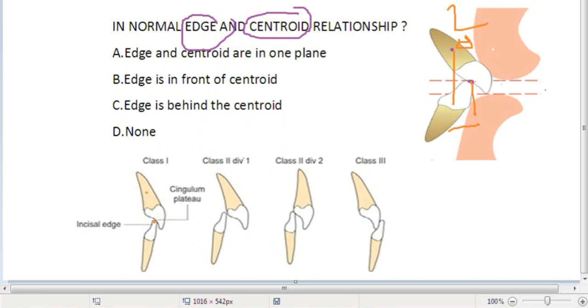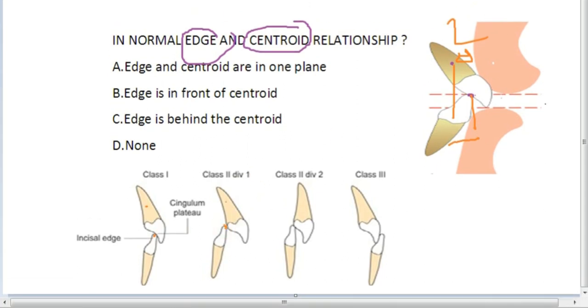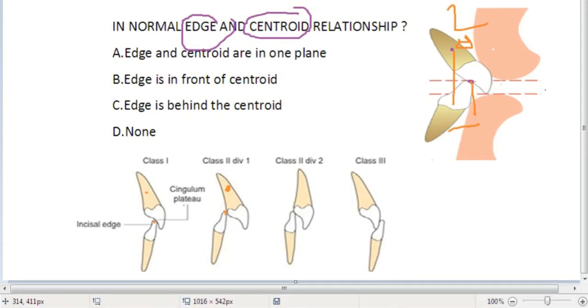If you take a Class 2 div 1, your edge will be here and your centroid will be here. So here two scenarios will come: either your edge will be in line with your centroid or it will be behind your centroid. This is what happens in Class 2 div 1.